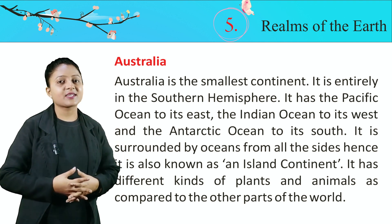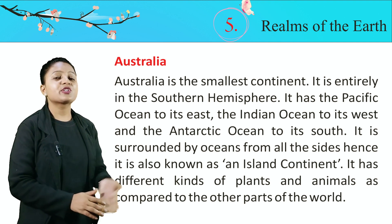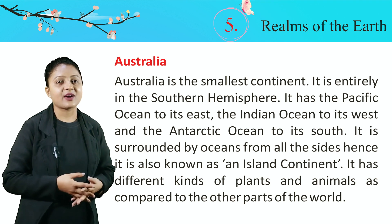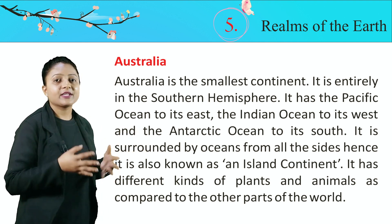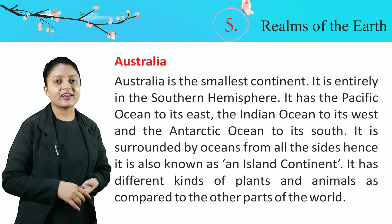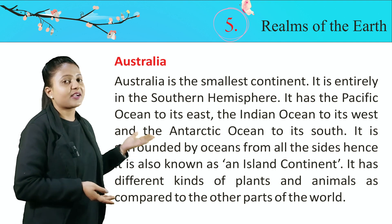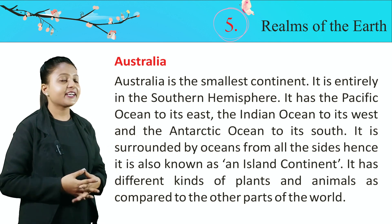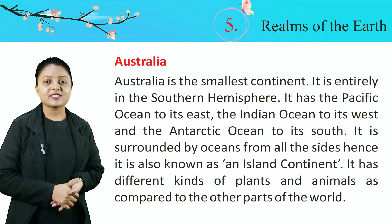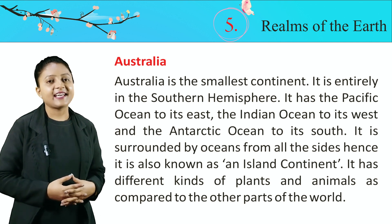Australia. Australia is the smallest continent. It is entirely in the southern hemisphere. It has the Pacific Ocean to its east, the Indian Ocean to its west, and the Antarctic Ocean to its south. It is surrounded by oceans from all sides. Hence, it is also known as an island continent. It has different kinds of plants and animals as compared to the other parts of the world. Australia sabse chota continent hai aur yeh charo taraf paani se ghira hua hai, isliye isko island continent bhi kehte hain. Yeh pura ka pura southern hemisphere mein lie karta hai.